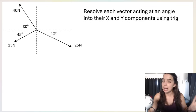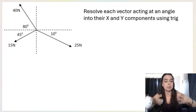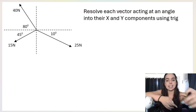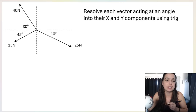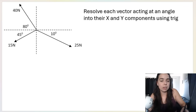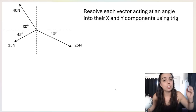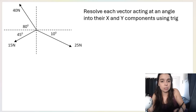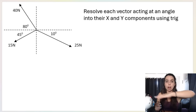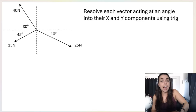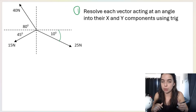Our first step, when we have vectors in multiple directions acting at an angle relative to the x and the y axis, is we need to break down these vectors into their components — what it's called is resolving vectors into their components. As soon as you see vectors acting at an angle — not straight up, straight down, straight left, or straight right — you know you need to apply step one: resolving vectors into their components.